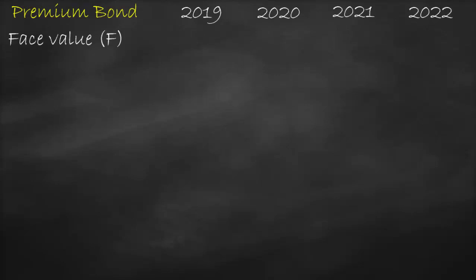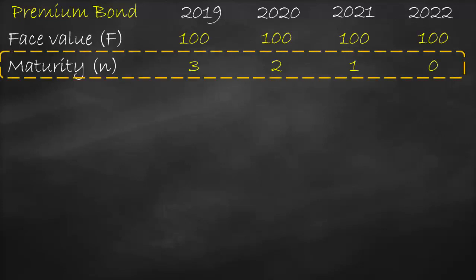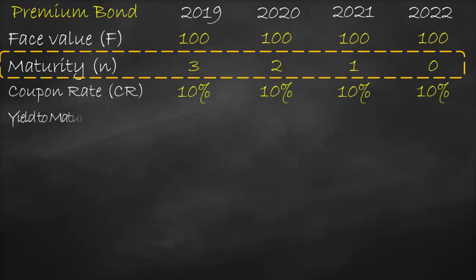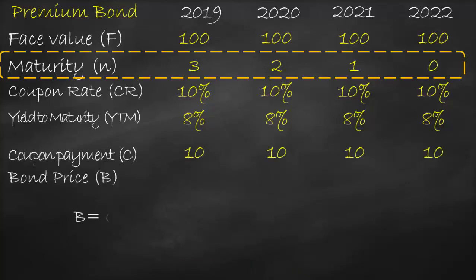Here we have years 2019, 2020, 2021, and 2022. Face value is 100. Years to maturity N: in 2019 we have 3, in 2020 we have 2, in 2021 we have 1, and in 2022 N equals 0. Coupon rate is 10% every year, and yield to maturity is assumed constant at 8%. The coupon payment is coupon rate times face value: 10% times 100 equals 10 every year.